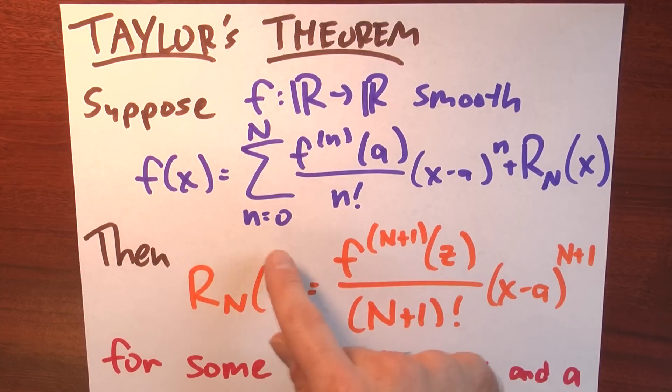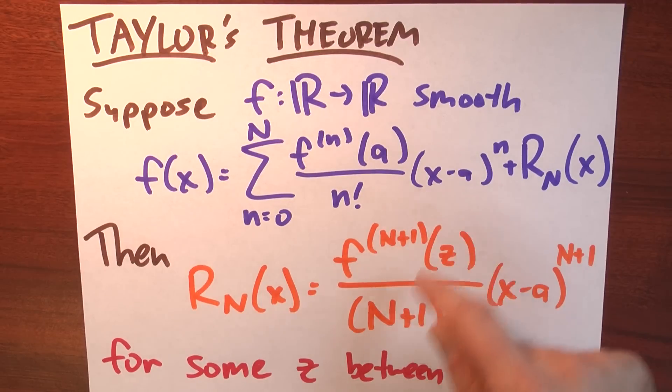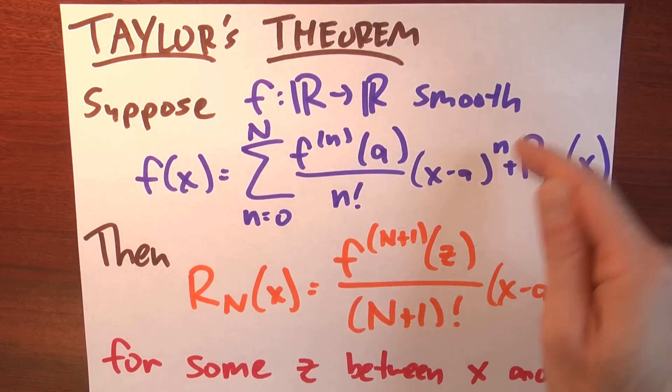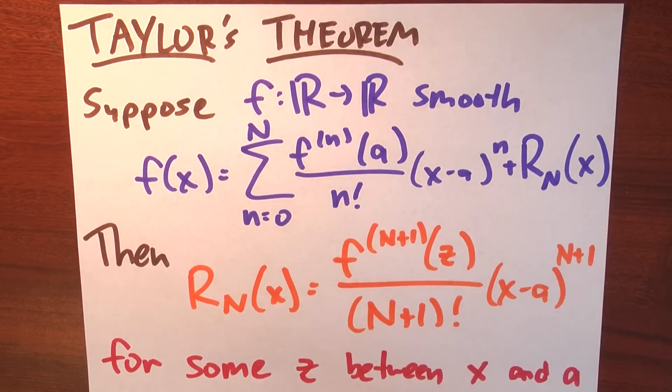All right, and f of x is a sum, little n goes from 0 to big n, of the little nth derivative of f at the point a, divided by n factorial, times x minus a to the nth power, plus this remainder term, big r sub big n of x.